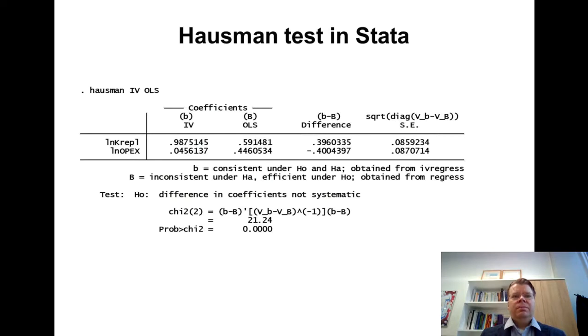Stata computes the standard errors for those. You will see it's also indicated that the null hypothesis is that the difference in coefficients is not systematic. This chi2(2), that's the test statistic. The Hausman test statistic value is equal to 21.24. You can see also the formula for that in matrix notation. This value of 21.24 should be compared to the table of the chi-squared distribution, or you can find the critical value in Excel. But Stata also gives this p-value automatically. This Prob>chi2, that is the p-value of the Hausman test.